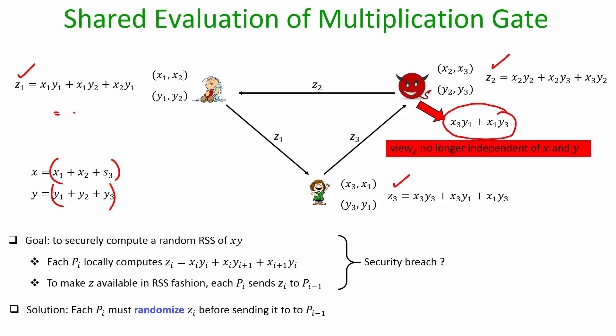The rectification for this problem is that each Pi should randomize Zi before sending it to its neighbor. So P1 should randomize Z1 and change it to some other value before sending it to P3, so that if P3 is corrupt it does not learn anything additional about X or Y. Similarly, P3 when sending Z3 should add some randomness, and P2 when sending Z2 should randomize it — all such that in this whole process we do not require any other communication.